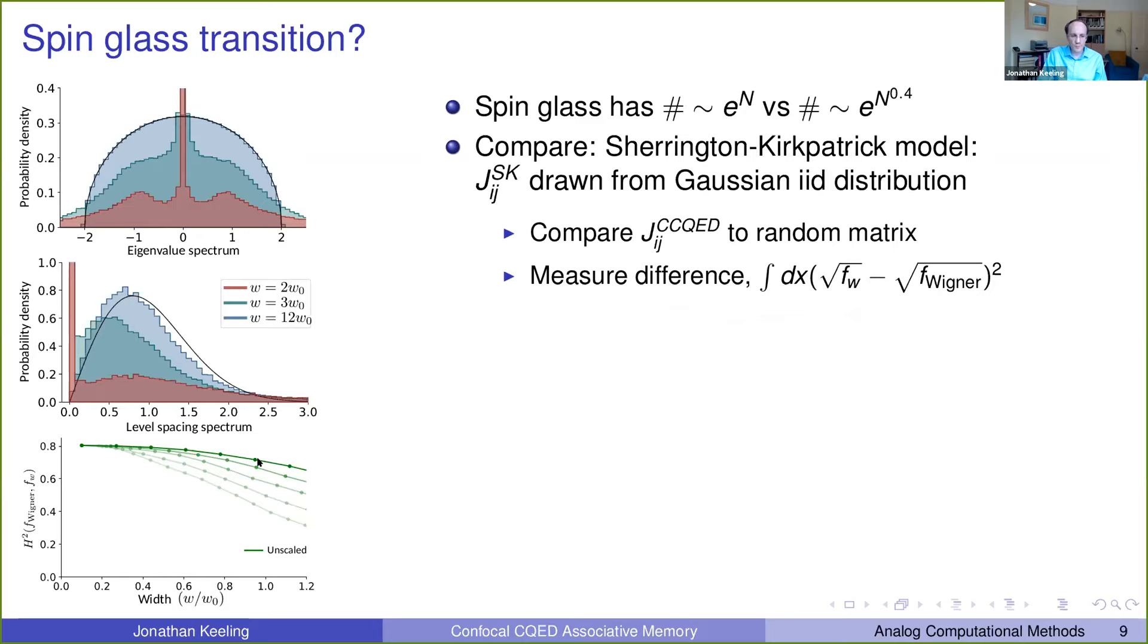Or if you look at the probability distribution of level spacing of this cavity QED JIJ matrix, it also converges on the Wigner surmise of this probability distribution, again shown like the black line. And you can actually go further than this. You could measure how different is the probability distribution from the Wigner distribution. And you see something which falls off as the width increases. But perhaps much more intriguingly, you can rescale that data, and you find again a data collapse if you choose the right scaling with system size. So what this says is that there is a transition to a spin glass-like behavior when W over W naught to the four is much greater than N. And this fourth power makes the kind of sense, because that was how the correlations between the JIJ elements fell off.